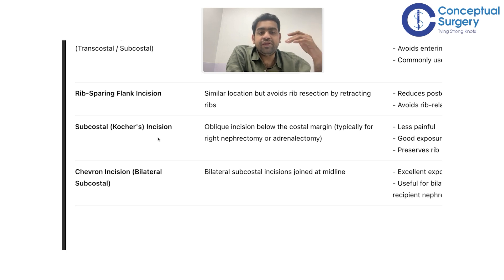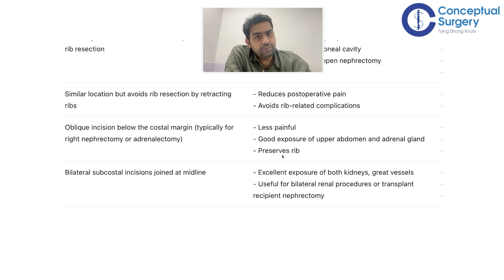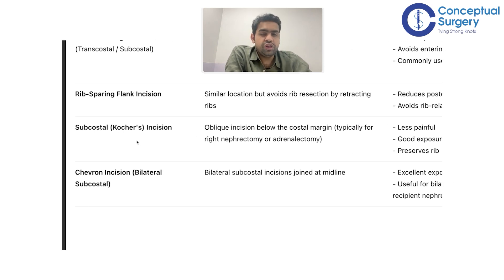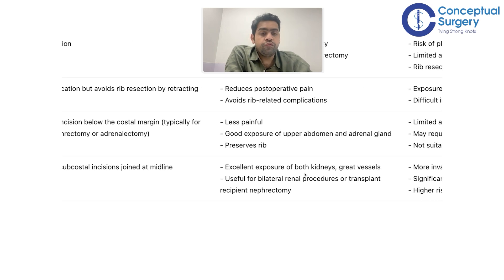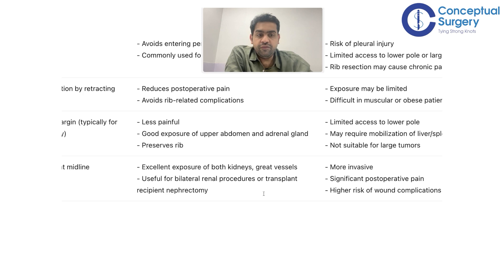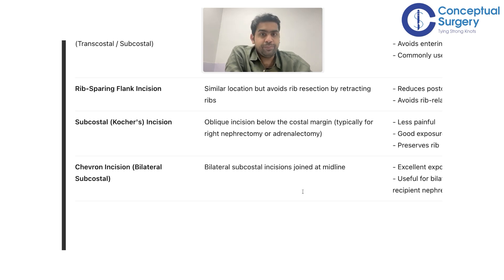The subcostal or Kocher's incision is an oblique incision below the costal margin, typically used for the right nephrectomy or adrenalectomy. It is less painful, gives good exposure to the upper abdomen and adrenal gland, and preserves nerves. The chevron incision is a bilateral subcostal incision joined in the midline. It provides excellent exposure for both kidneys and aortic vessels, useful for bilateral renal procedures or transplant recipient nephrectomy, but it is more invasive with significant post-operative pain and higher risk of wound complications.